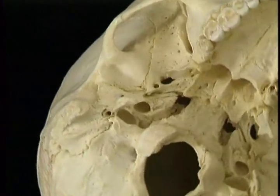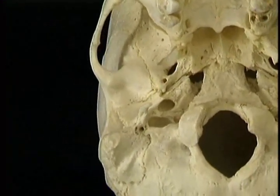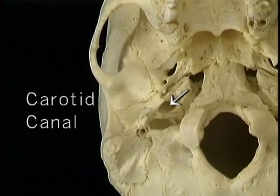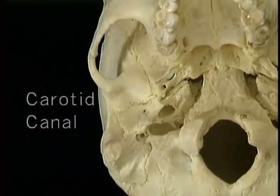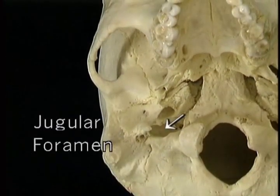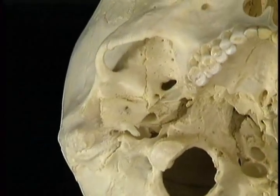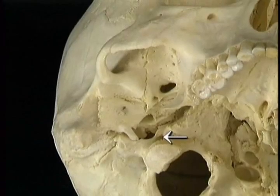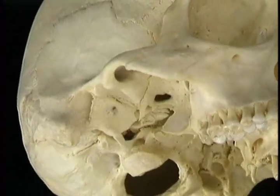Just at the base of the styloid is the little stylomastoid foramen for the facial nerve. Medial to the styloid process are two major openings for blood vessels: the carotid canal passing forwards for the internal carotid artery, and the jugular foramen passing backwards for the internal jugular vein. Just above the occipital condyle is the hypoglossal canal for the hypoglossal nerve.